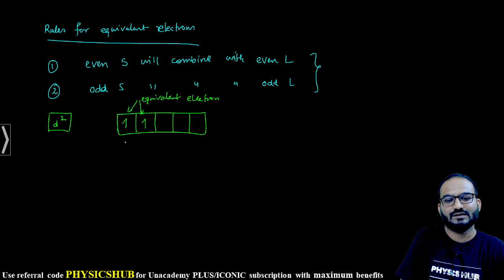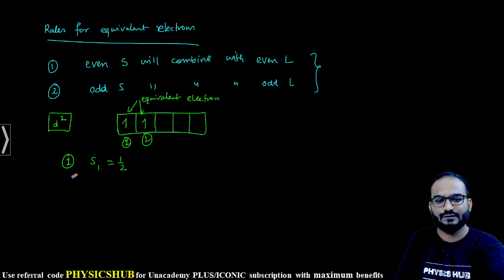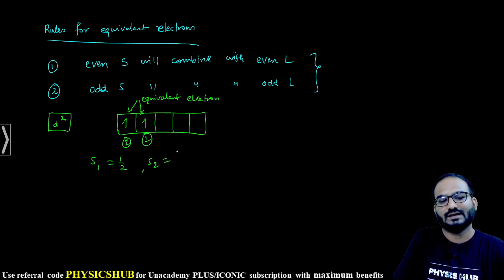If you consider for the first electron, this is electron number 1, this is electron number 2. For electron number 1, the spin quantum number S₁ is half. For the second one, that is also half. So this will give rise to total spin quantum number - it may be 0, it may be 1.